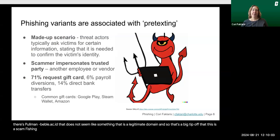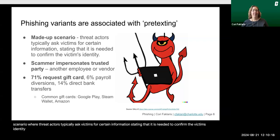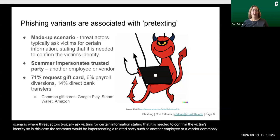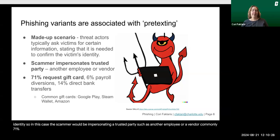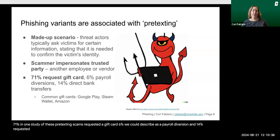Phishing variants are associated with what we call pretexting. In security awareness, we describe this as a made-up scenario where threat actors typically ask victims for certain information, stating that it is needed to confirm the victim's identity. The scammer would be impersonating a trusted party, such as another employee or a vendor. In one study, 71% of these pretexting scams requested a gift card, 6% could be described as payroll diversion, and 14% requested direct bank transfers.